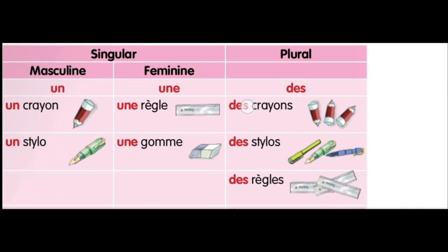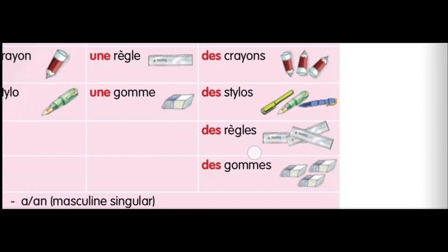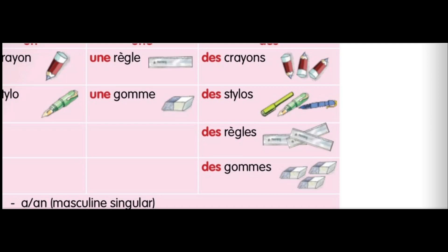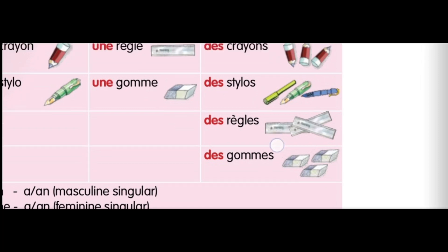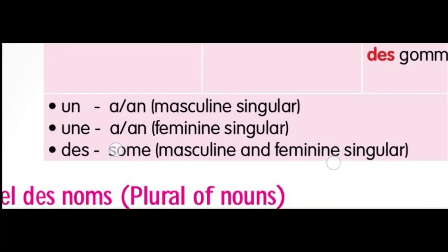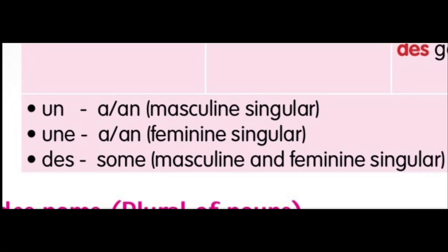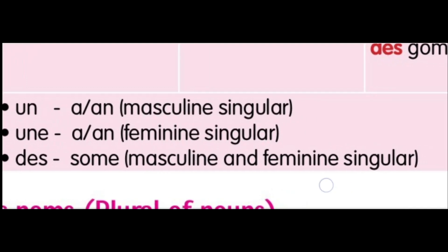Now let us go on to the plural indefinite article, which is 'des'. For example: 'des crayons' means some pencils, 'des stylos' means some pens, 'des règles' means some rulers, 'des gommes' means some erasers. We use 'des' when we don't know the quantity. To summarize: 'un' is for masculine singular meaning 'a/an', 'une' is for feminine singular meaning 'a/an', and 'des' means 'some' and is used for both masculine and feminine plural.